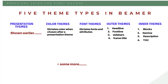Color themes dictate which colors are used in a particular theme. Font themes dictate the font and their attributes. Outer themes control anything which is outside the main text — since main text is inside a frame, everything outside such as headlines, footlines, sidebars, and frame titles is controlled by outer themes. Inner themes control everything inside the text, such as the example blocks and alert blocks that I showed in my previous lecture.